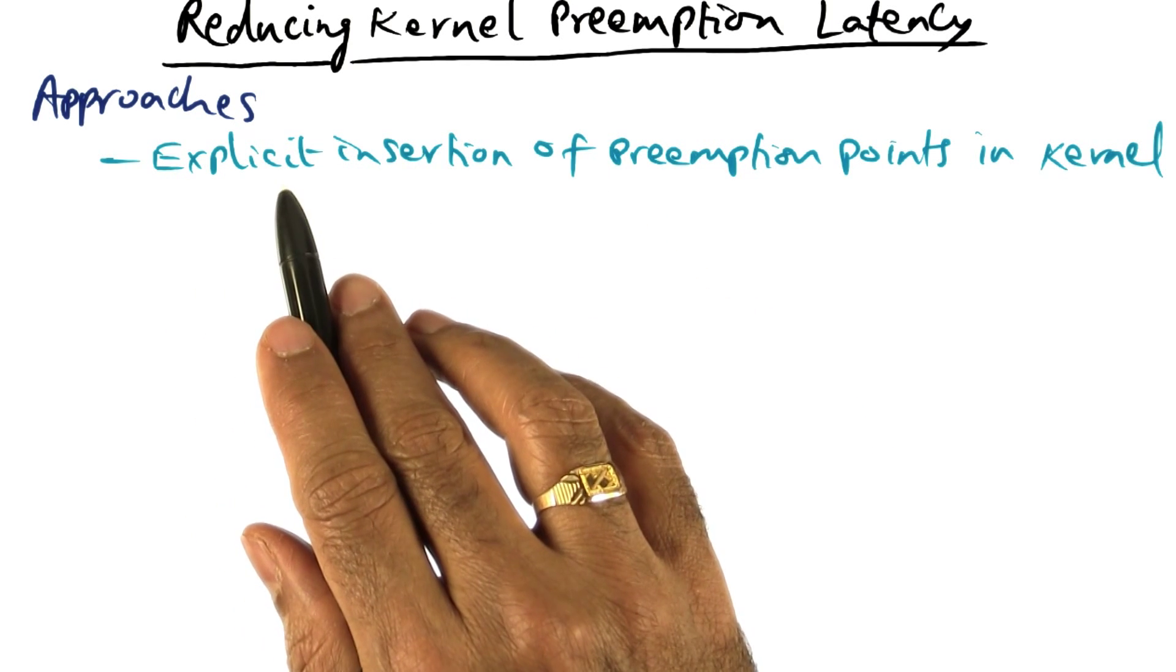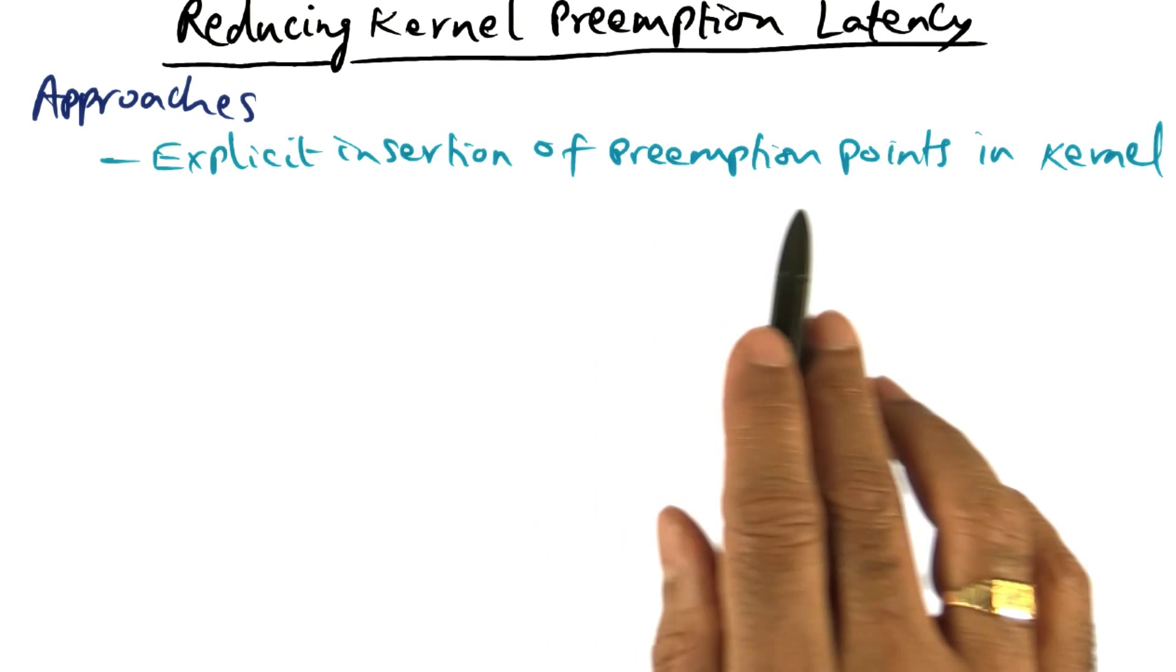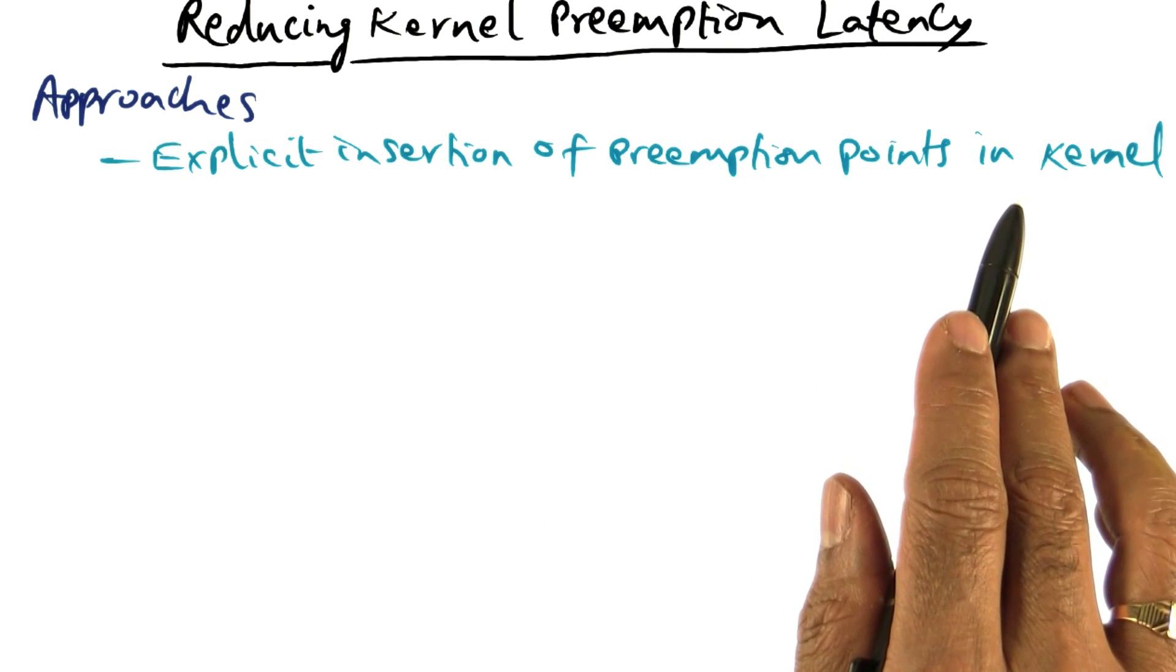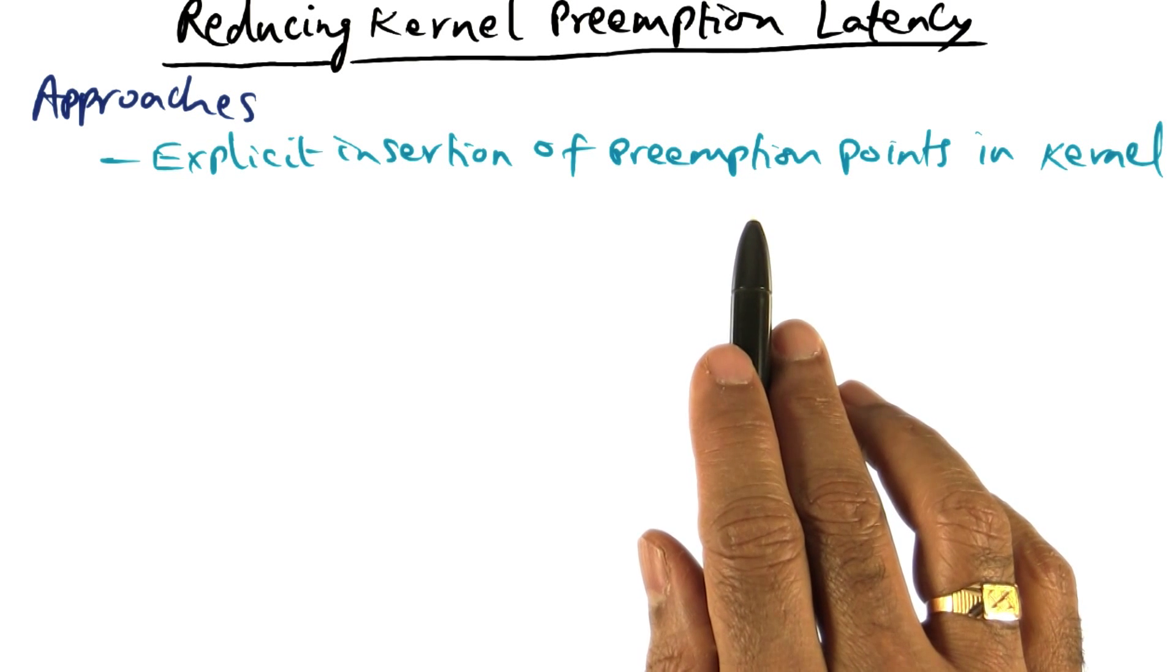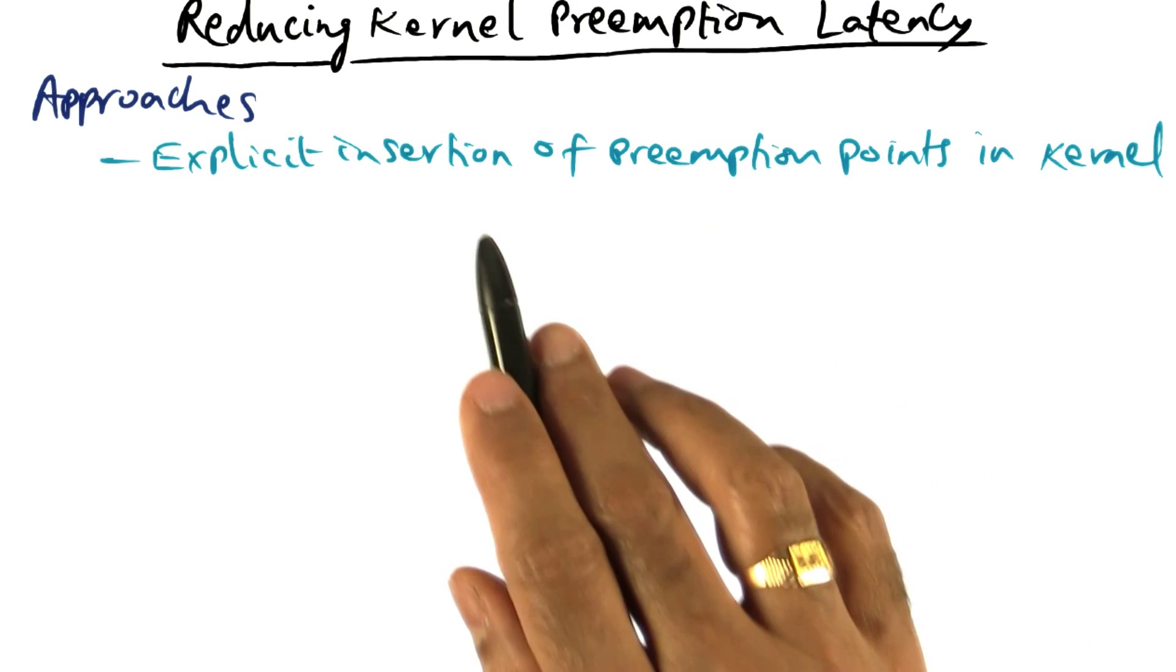The first approach is to explicitly insert preemption points in the kernel so that it can actually look for events that may have gone off and take action.